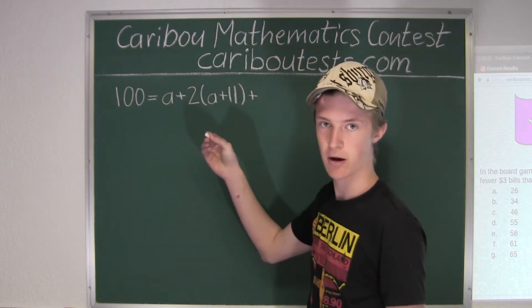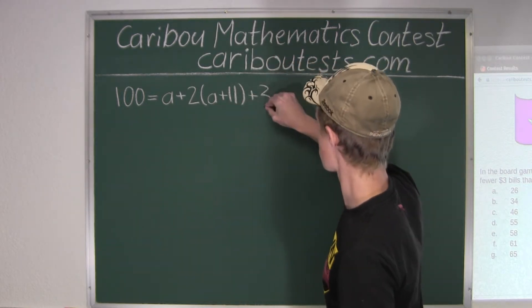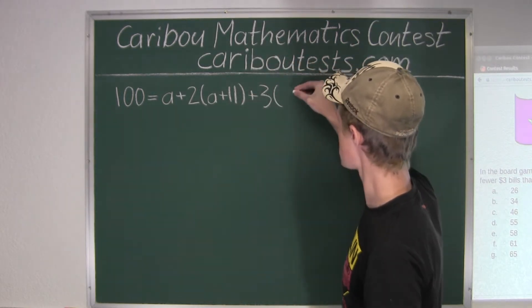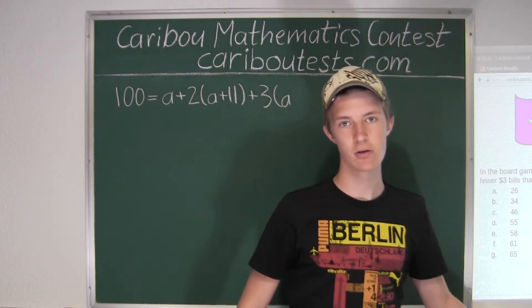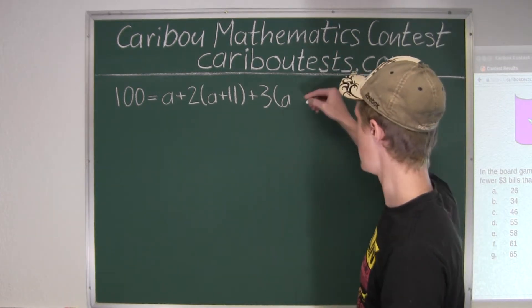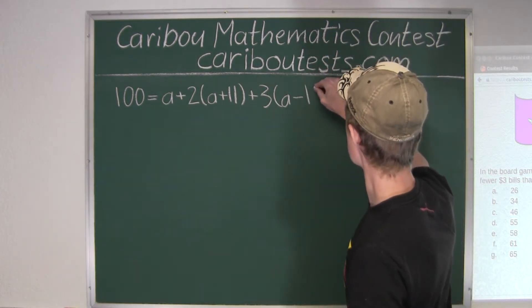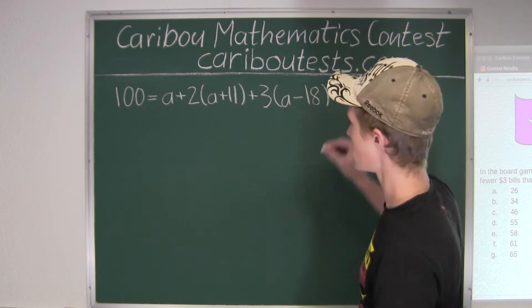And now for the $3 bills, we have 3 times, in brackets, and it says that there are 18 fewer $3 bills than $1 bills, so we have A minus 18.